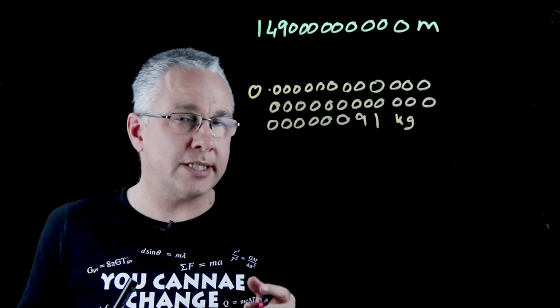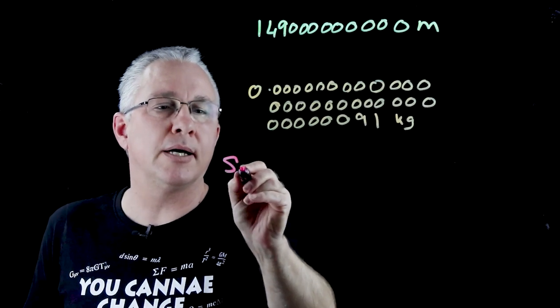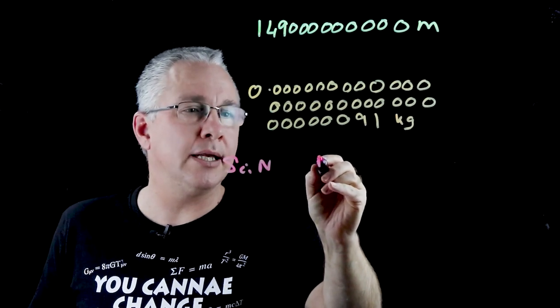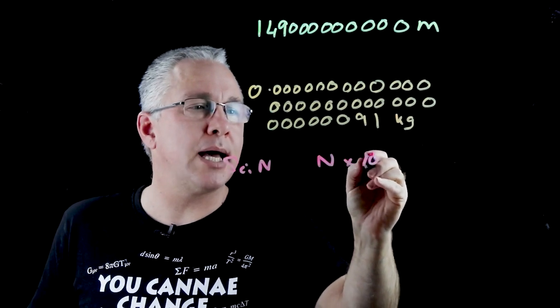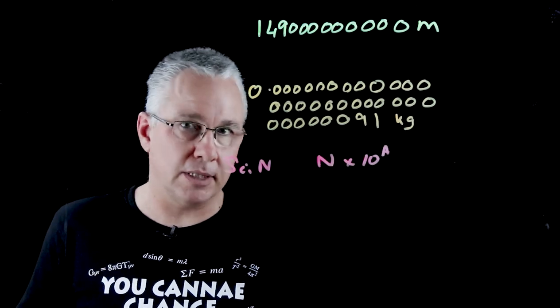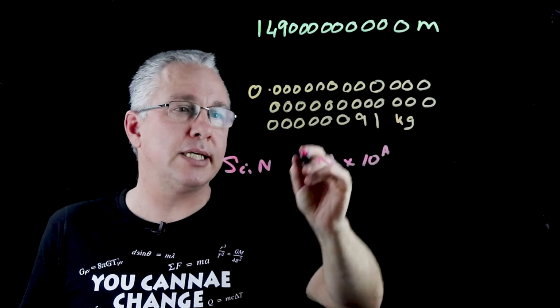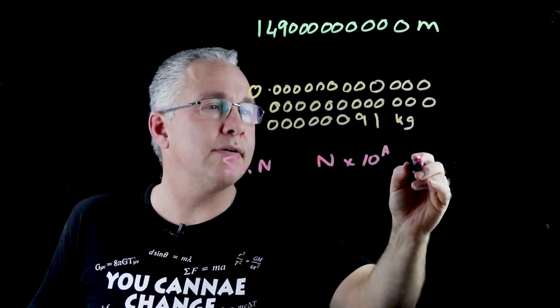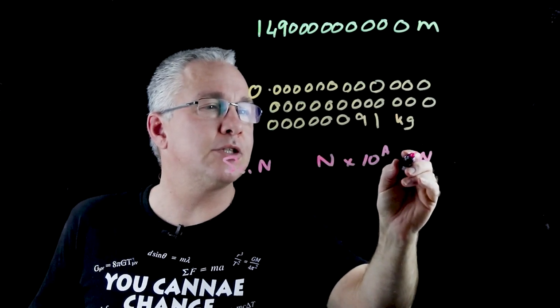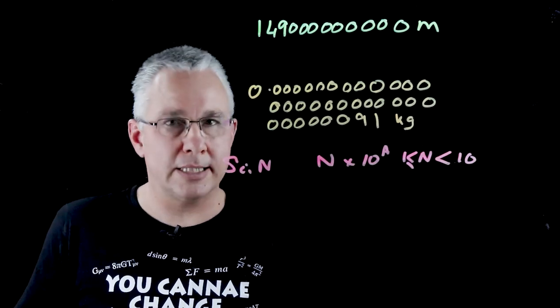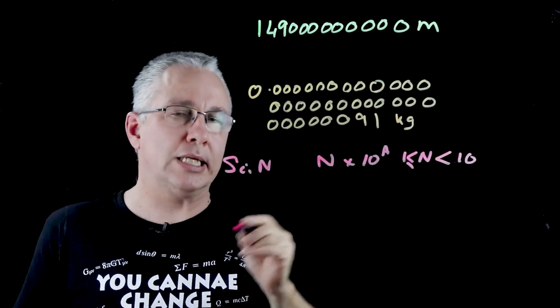With scientific notation we usually put our number in terms of a value, which we're going to call n, multiplied by 10 to the power of some number like so. What we do then is simply convert that. Now n, however, needs to be a number that's between 1 and 10, and it's allowed to be equal to 1, but not less than 1.